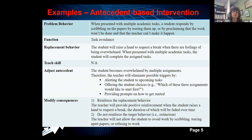We aren't going to teach a skill at this point, but we are going to adjust the antecedent. When the student becomes overwhelmed by multiple assignments, the teacher can eliminate triggers by alerting the student to upcoming tasks, offering the student a choice — 'Which of these three assignments would you like to start first?' — and providing prompts on how to get started. For consequences, we will reinforce the replacement behavior of requesting a break, and we will not reinforce the maintaining behaviors seen in the ABCs.